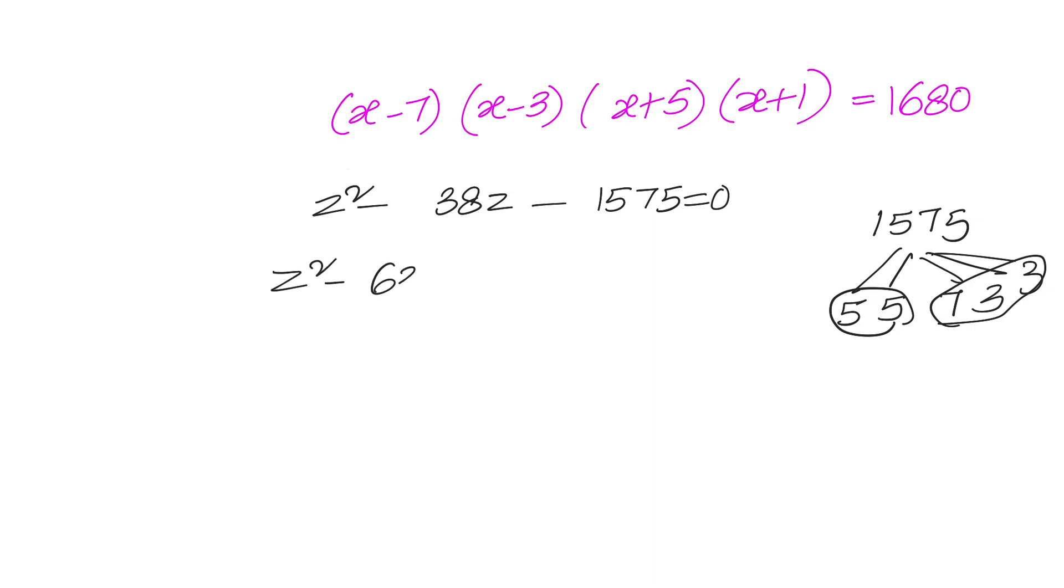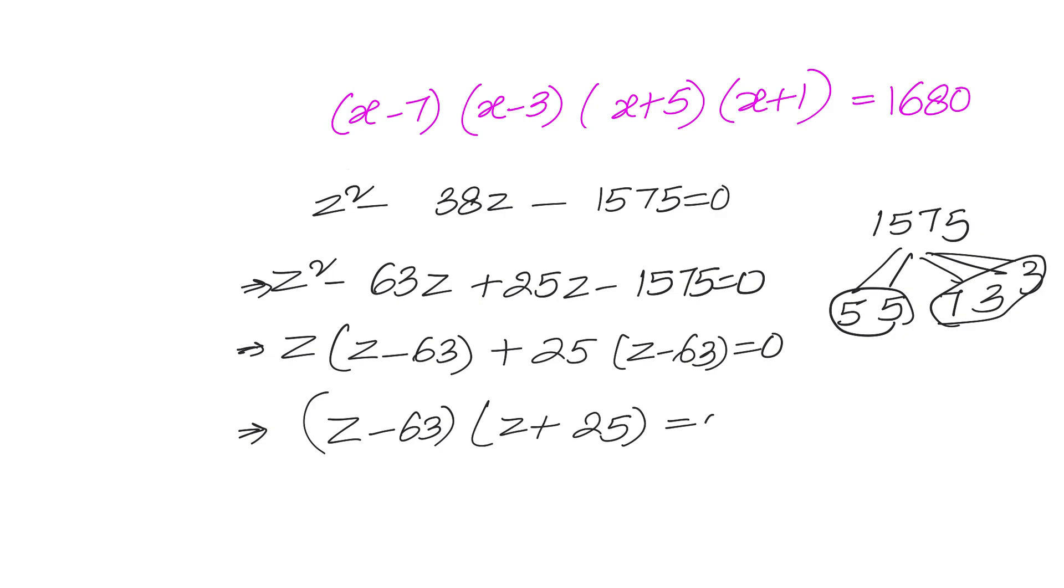I can write down z square minus 63z plus 25z minus 1575 equals to 0. Now, we can simplify that and we can say z into z minus 63 plus 25 into z minus 63 equals to 0. That will give us z minus 63 into z plus 25 equals to 0.